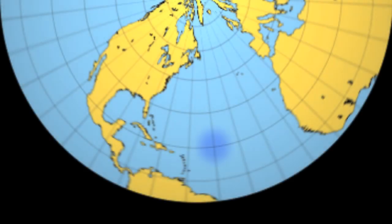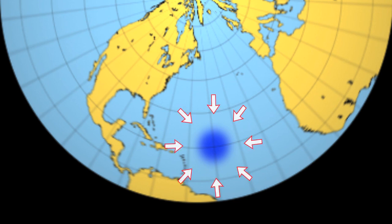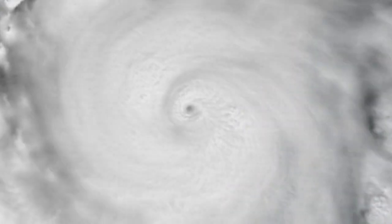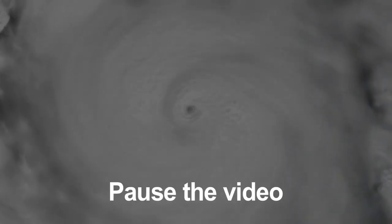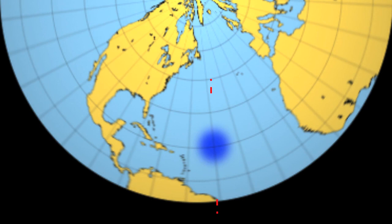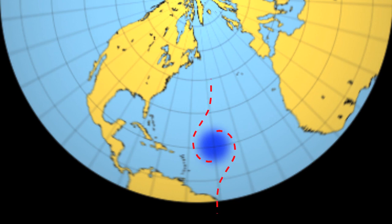Hurricanes are formed when there are small regions of very low air pressure. The existence of this low pressure region causes air from all directions to move towards the low pressure zone. With this information and what you know about the Coriolis effect, explain why hurricanes in the northern hemisphere rotate counterclockwise. As air moves towards the low pressure zone, the air moving from the south veers to the right due to the Coriolis effect. Similarly, air moving from the north veers to the left of the low pressure zone. At the same time, air is constantly pulled in towards the low pressure zone. The combination of these processes creates a region of counterclockwise rotating air — this is why hurricanes in the northern hemisphere rotate counterclockwise.